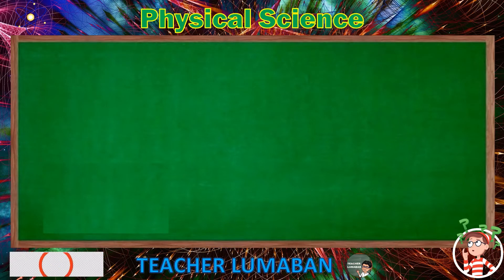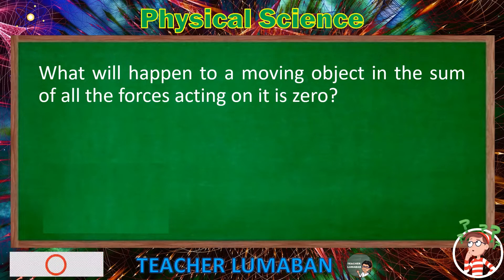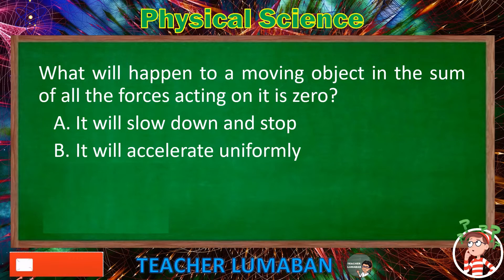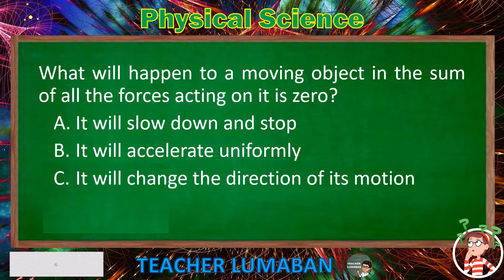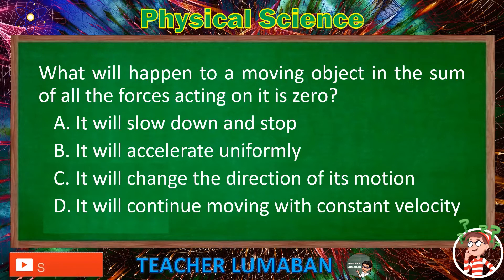What will happen to a moving object if the sum of all the forces acting on it is zero? Letter A: It will slow down and stop. Letter B: It will accelerate uniformly. Letter C: It will change the direction of its motion. Letter D: It will continue moving with constant velocity.